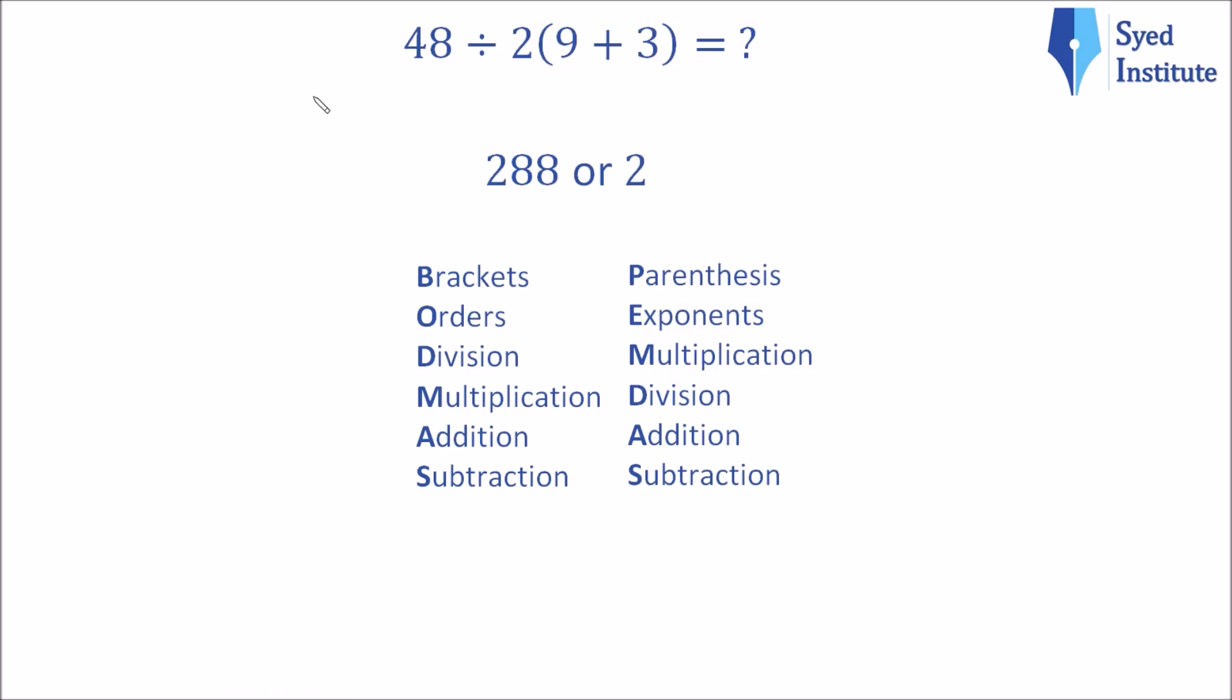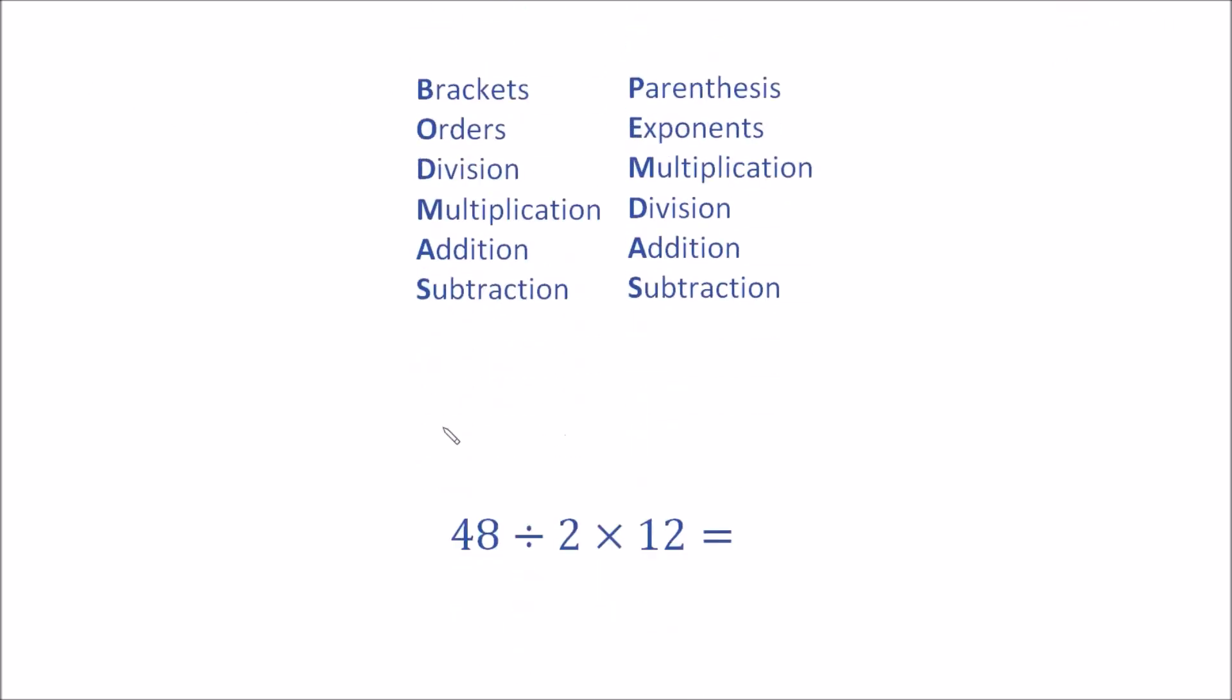But first, let us try to evaluate this in the way most people seem to be doing it, that is using the convention of BODMAS or PEMDAS. The first stage says brackets or parentheses, and this leaves us with 48 divided by 2 times 12.